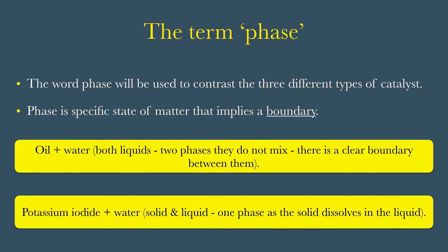I will be discussing the types of catalysis in a moment and the term phase will be used. A phase is a specific state of matter that implies a boundary. It does not necessarily have to be between two different states of matter. For instance, oil and water are both liquids, however they do not mix. There is a clear boundary between them, therefore they are in two phases. But suppose you add potassium iodide to some water, the potassium iodide dissolves in the water and now you only have one phase.